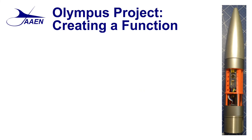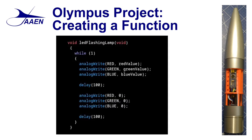The next thing we're going to look at is how we go about creating a function. We're going to take a closer look at our flashing lamp function — the one we use in the Olympus project. What we wanted here was a function that will flash the lamp whenever an error is encountered. As we start to create the function, we enter a return type, a name, and parameters if there are any. In this case, there's no return type so it's listed as void, no parameters so it's also void, and we've called it LED flashing lamp, which gives a good idea of what the function does. Then we write the code that actually flashes the lamp — in this case it's indicating an error in our BMP180.